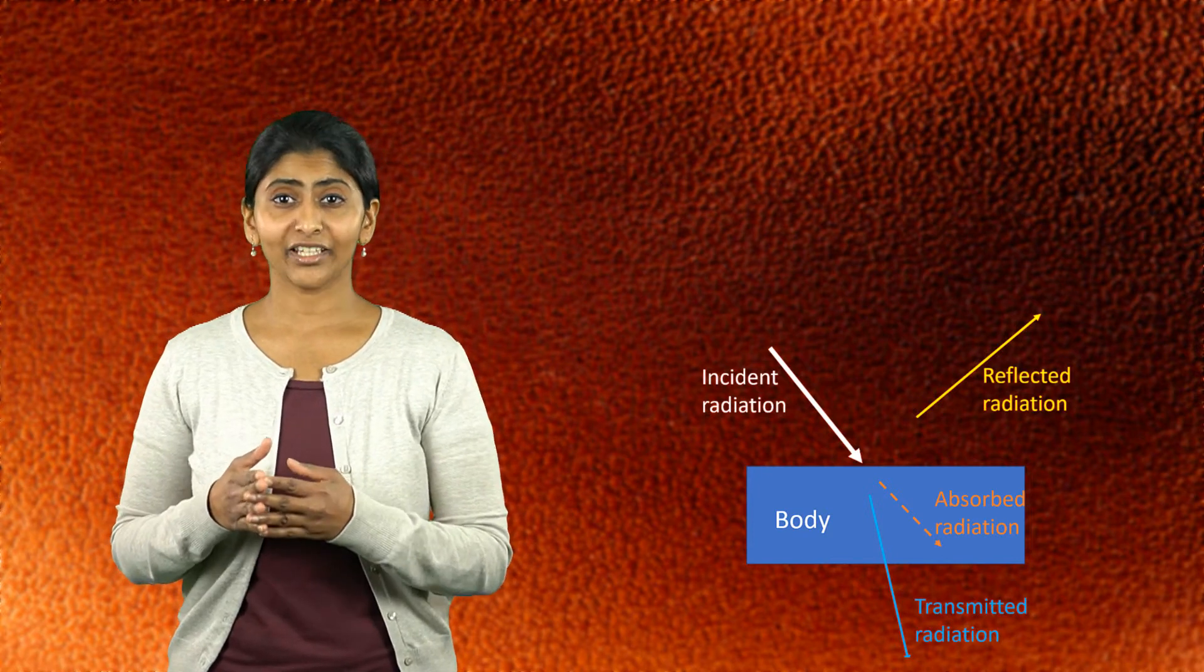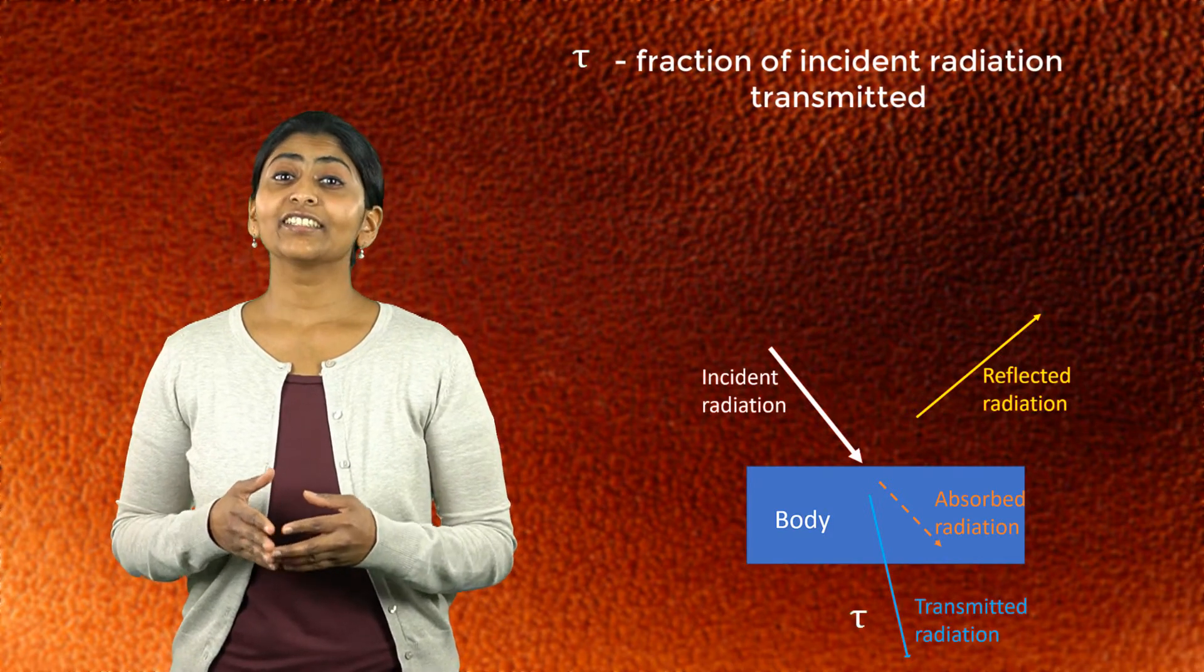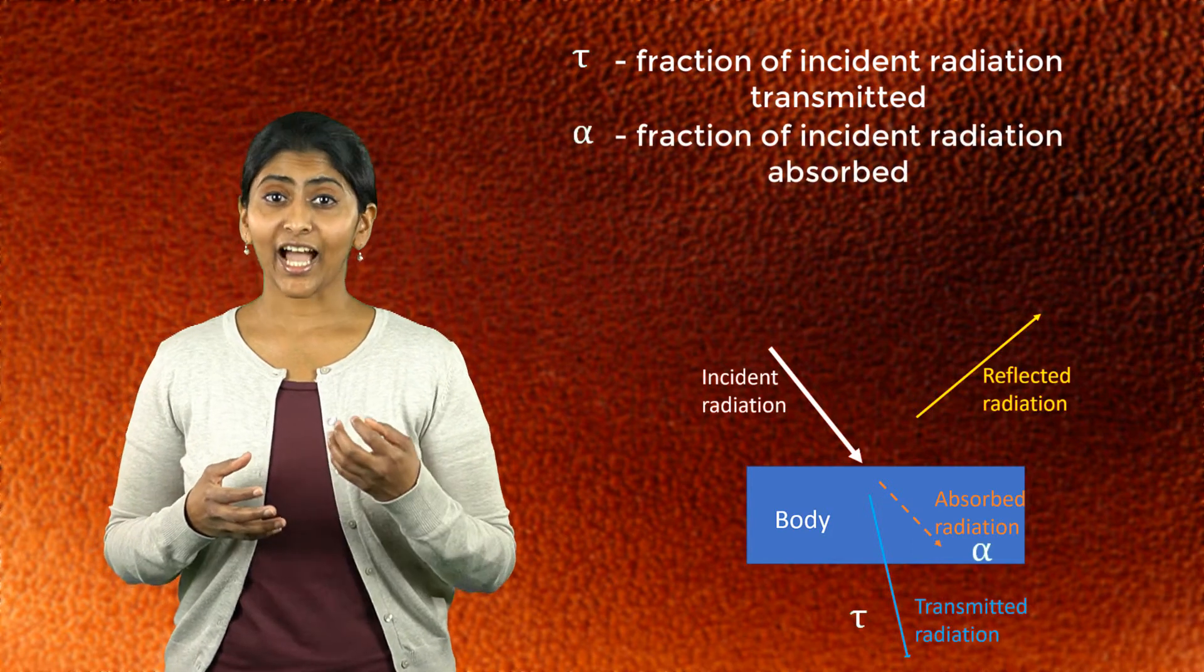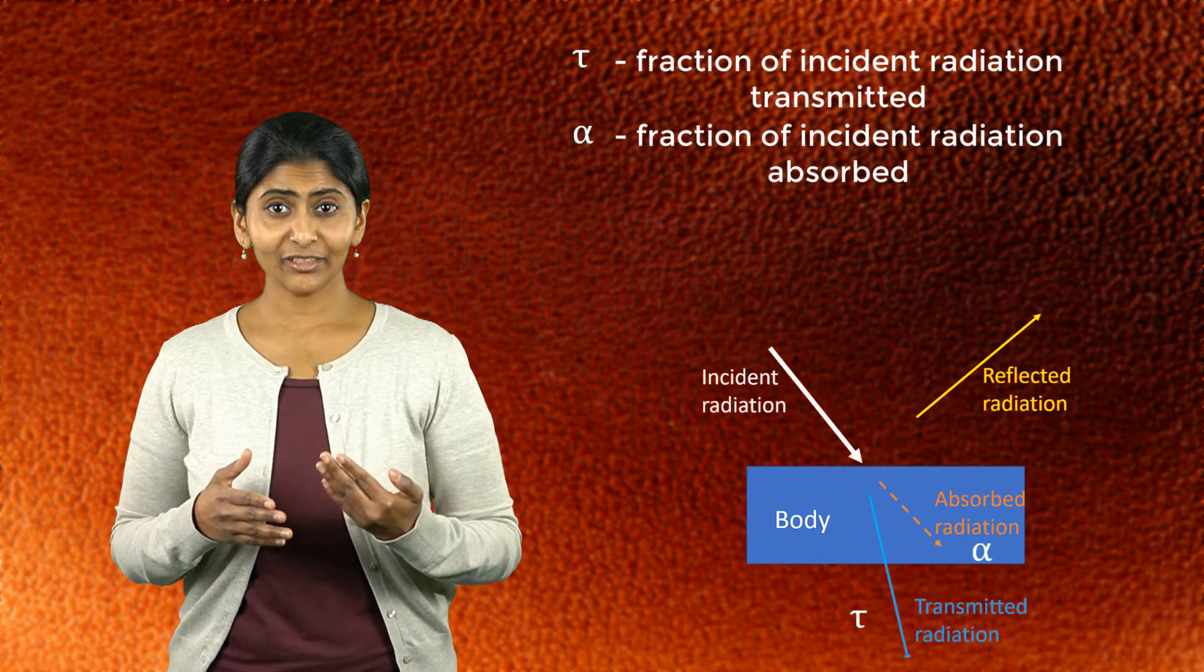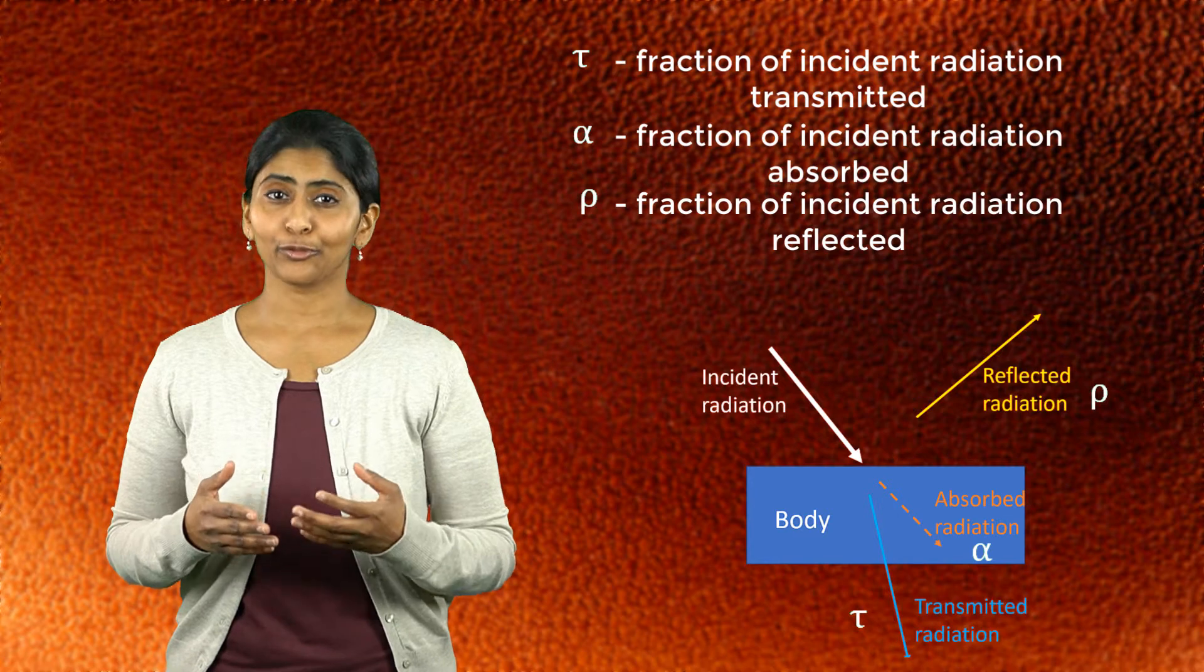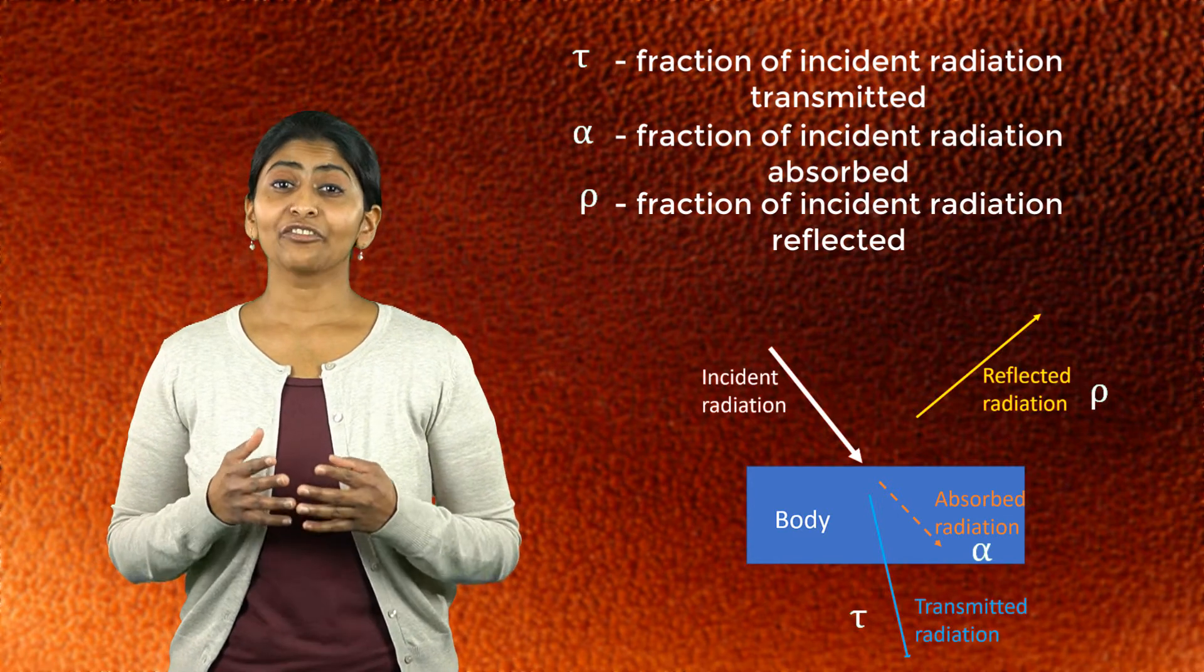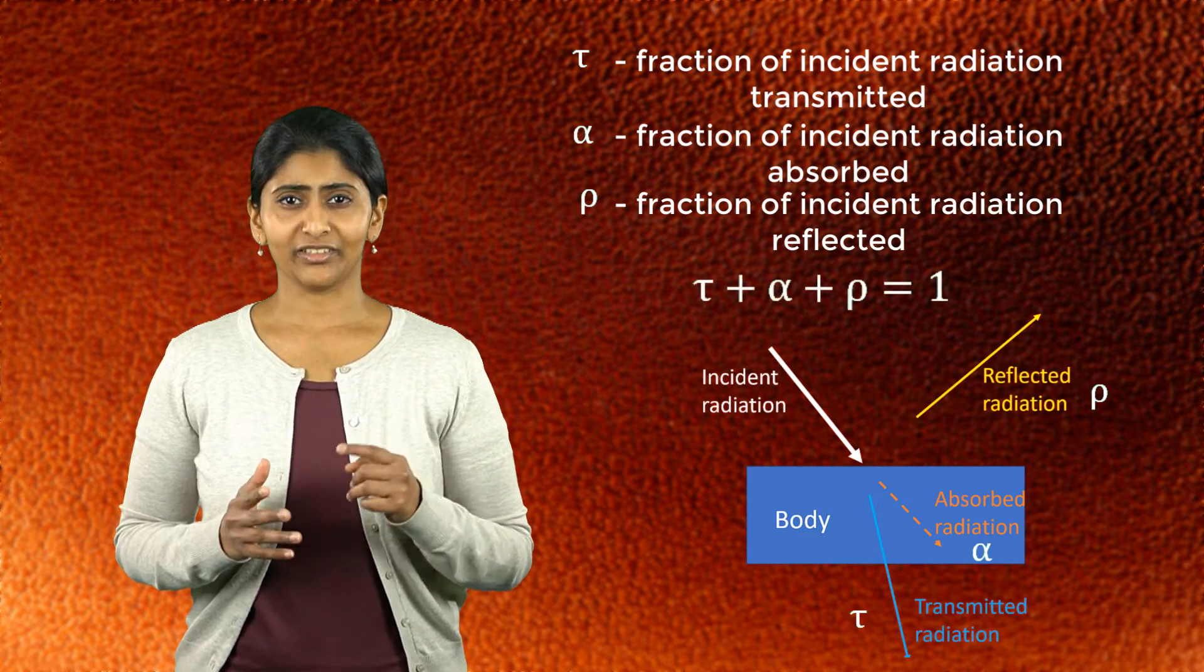The fraction of the incident thermal radiation that is transmitted by a body is known as the transmissivity tau. The fraction that is absorbed by the body is known as absorptivity alpha. And the fraction that is reflected by the body is known as its reflectivity rho. Since these three components are fractions of the incident radiation, they always add up to 1.